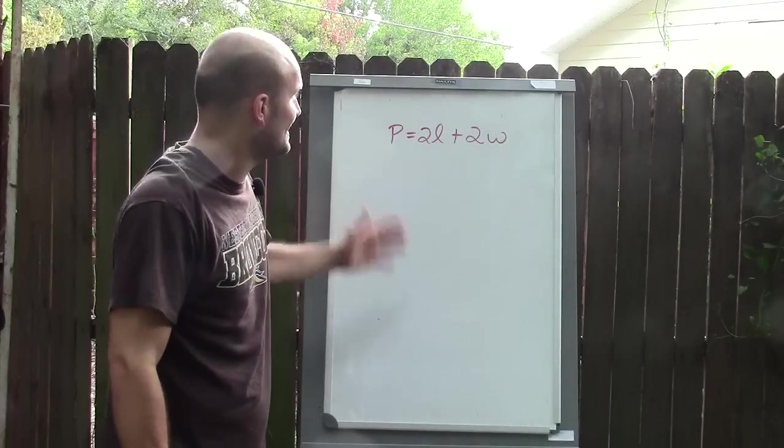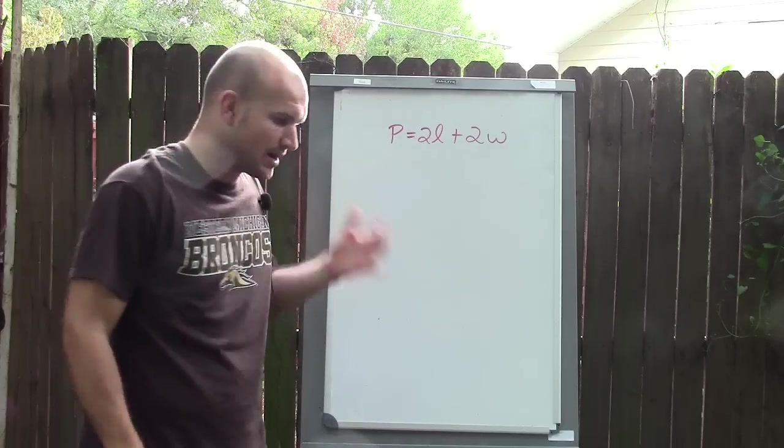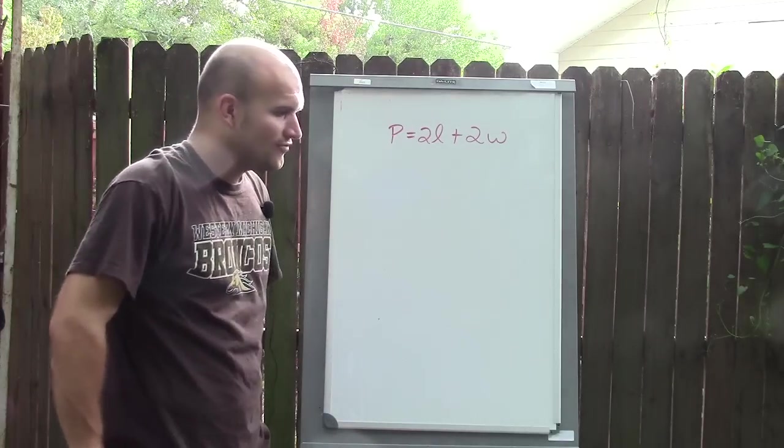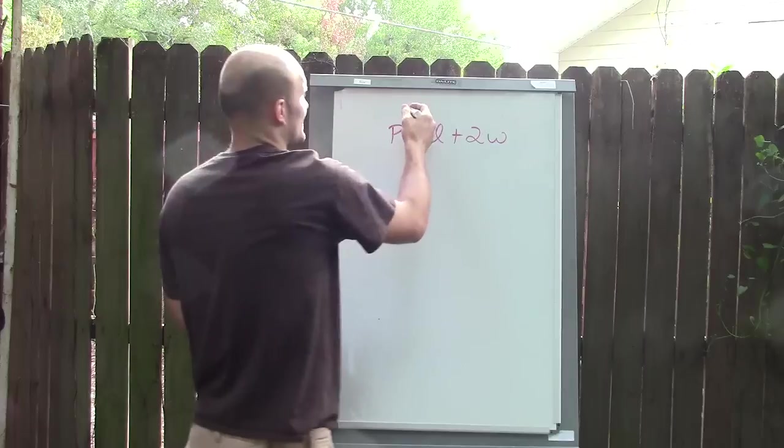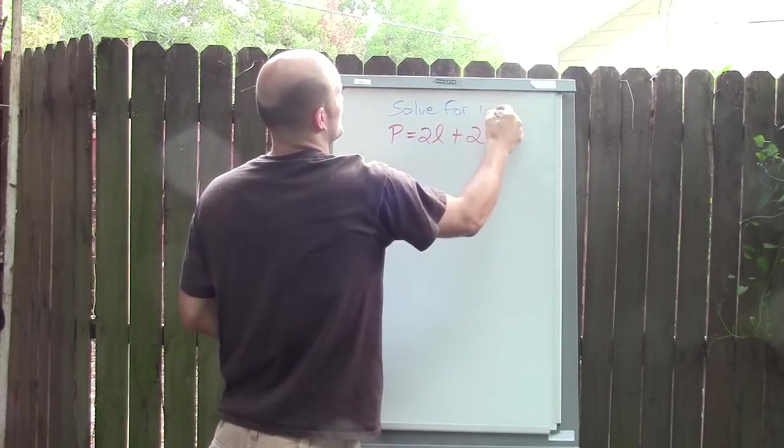Okay, here we go. I got P equals 2L plus 2W. What I'm going to do for this problem is solve for—I forgot to write it—it says solve for W.